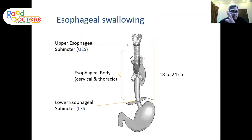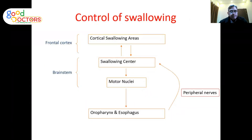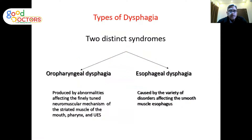Once food is in the upper esophagus, it must transit through the body of the esophagus across the lower esophageal sphincter into the stomach. This process is carried out through peristalsis of the esophageal muscles. The entire mechanism involves muscles controlled by nerves, which are in turn controlled by the brain — including a cortical swallowing area and a swallowing center in the brainstem.